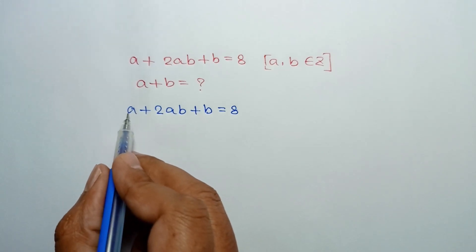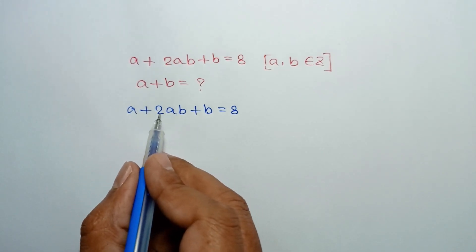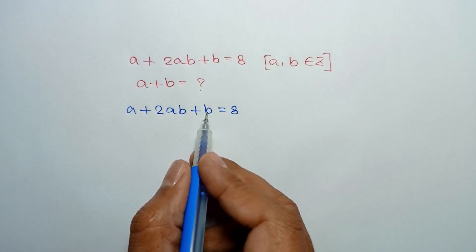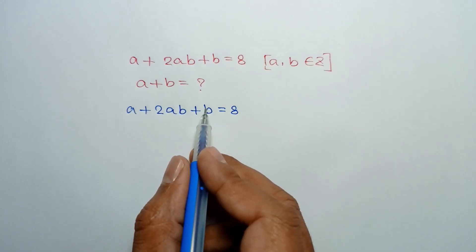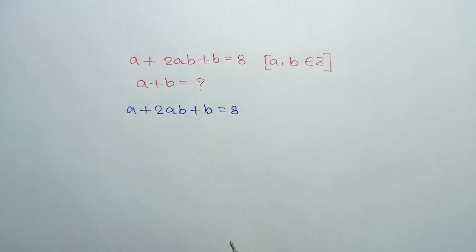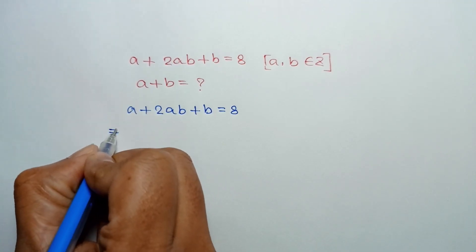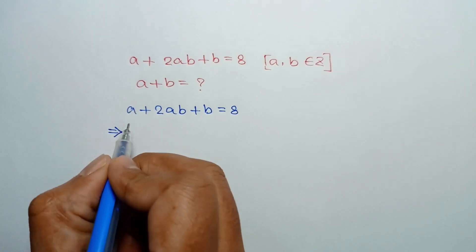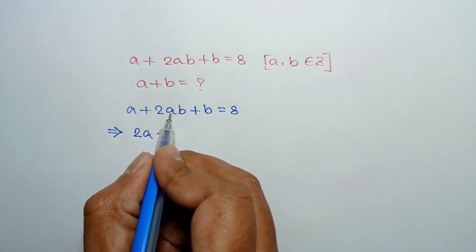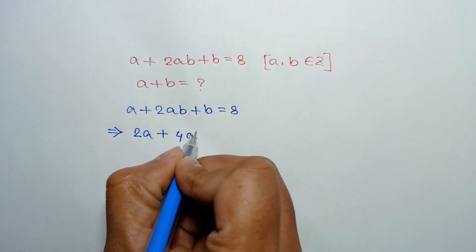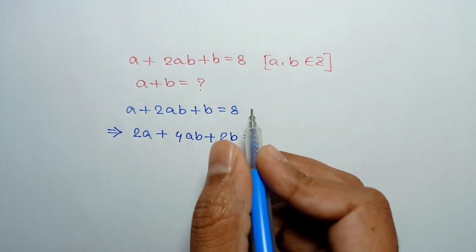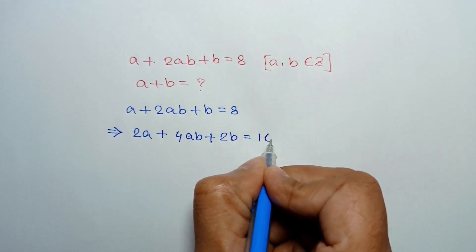Now, if we take common a from the first two terms, it will remain 1 plus twice b. But there is only b, so to make twice b, we have to multiply both sides by 2. Multiplying both sides by 2, we will have twice a plus 4ab plus twice b is equal to 16.